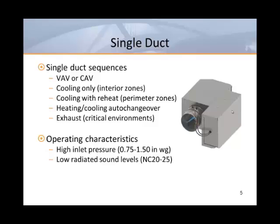Multi-point center averaging sensors are preferred because they can provide improved accuracy with poor inlet conditions. Although single duct boxes have very low pressure requirements, the addition of reheat coils, especially multi-row water coils, can result in inlet pressure requirements as high as 1.5 inches of water.